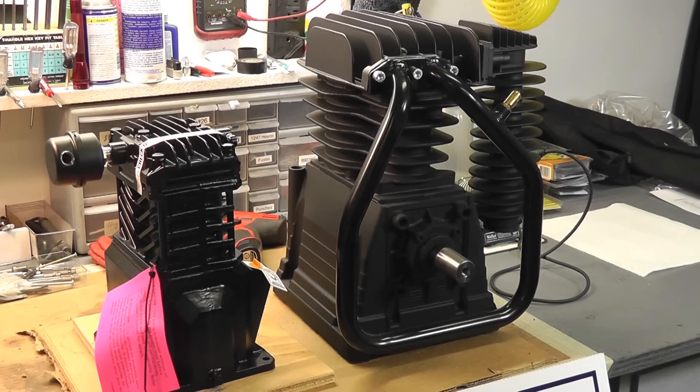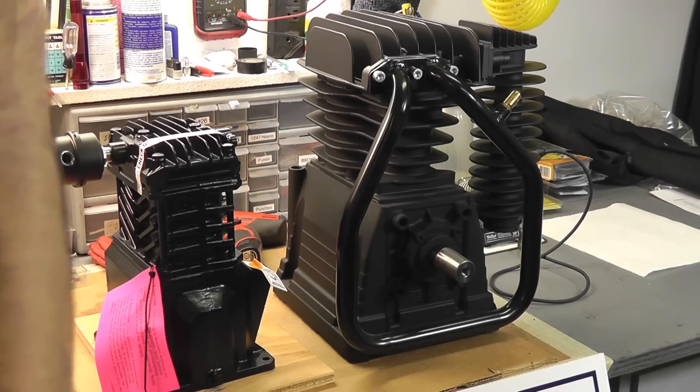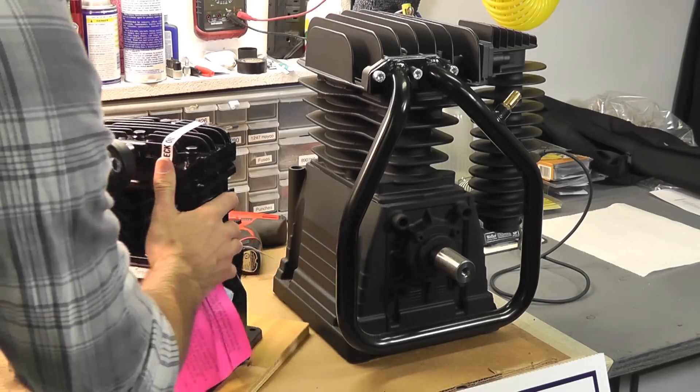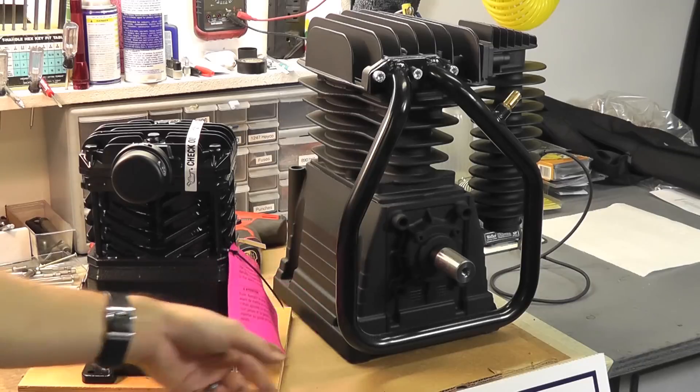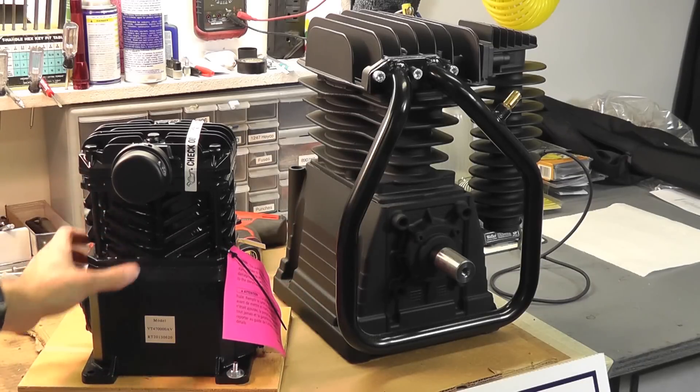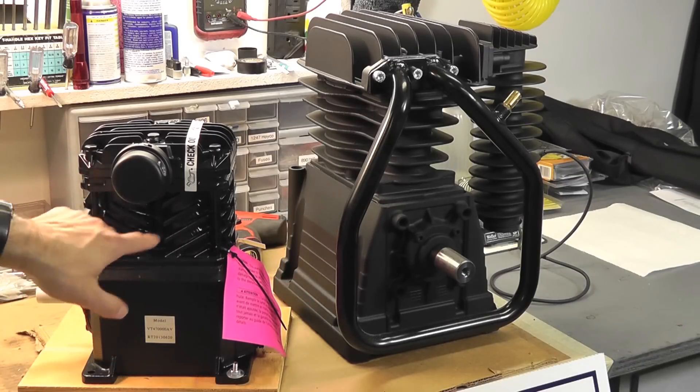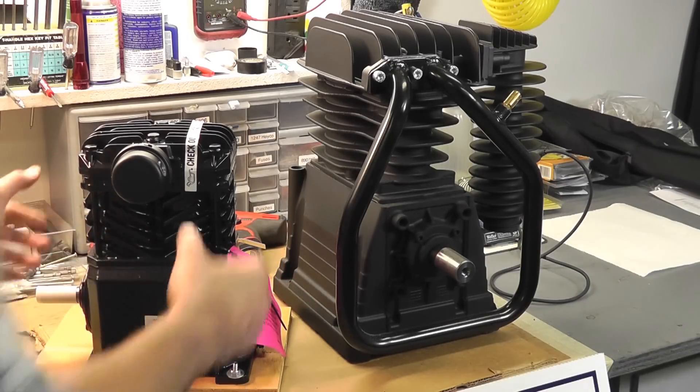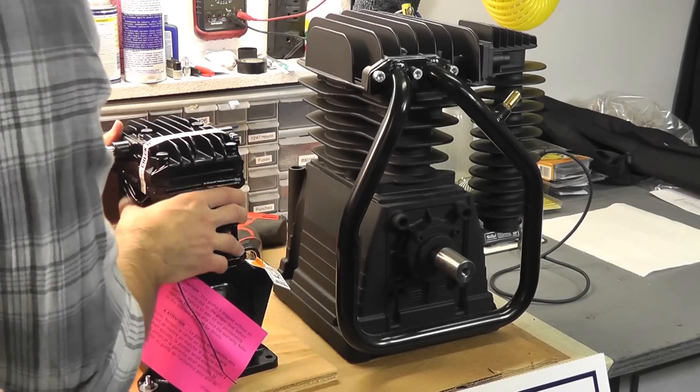But you could have a four piston pump, yet it could still be a single stage. So it's really not the number of cylinders. Now you'll notice here that these cylinders on the single stage, which is a Campbell VT series, used on Husky units and Campbell Hustfeld units, yet the cylinders are the same size. So that's a giveaway of a single stage compressor.